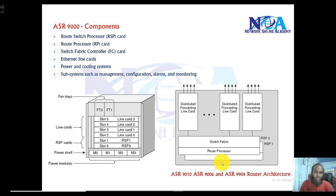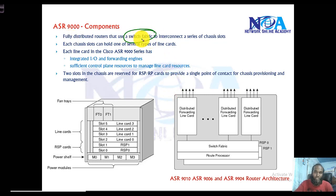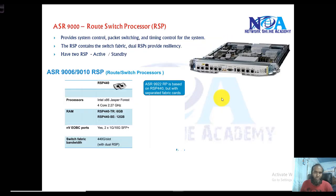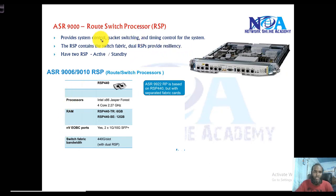Let's understand the main components of the ASR 9000 series routers. The first three or four main components are the route switch processor cards, route processor cards, fabric controller cards, and the ethernet line cards. The ASR 9000 series are fully distributed routers and use something called switch fabric, which interconnects all the slots.